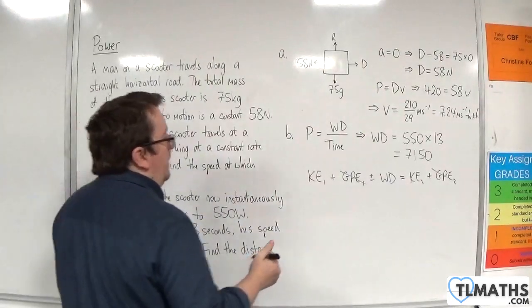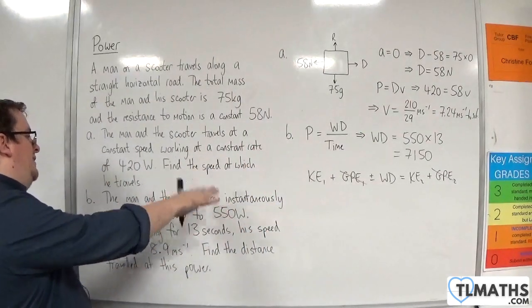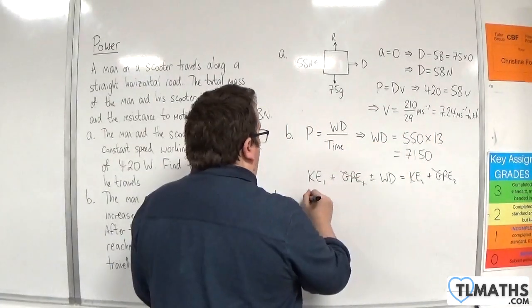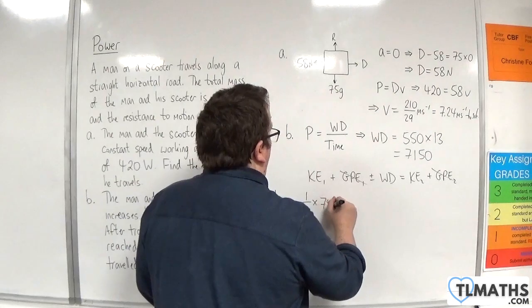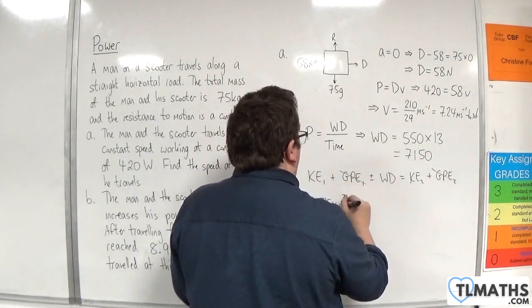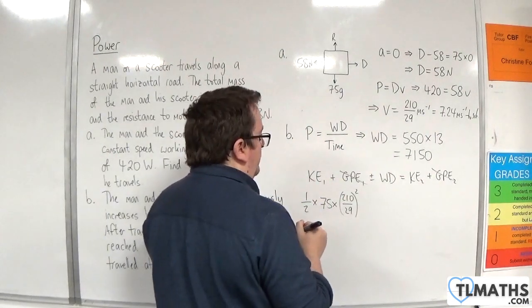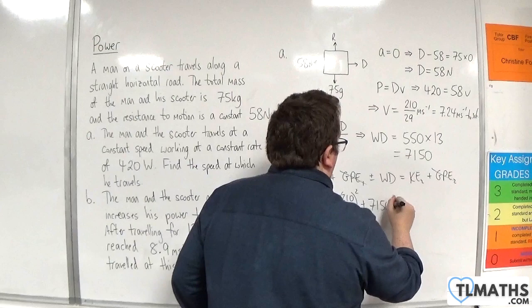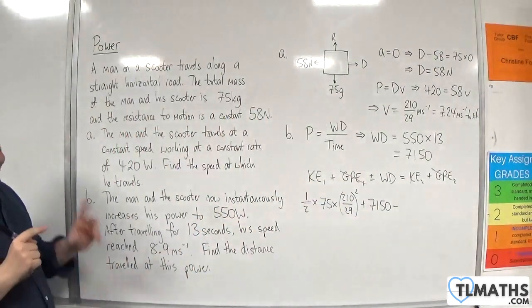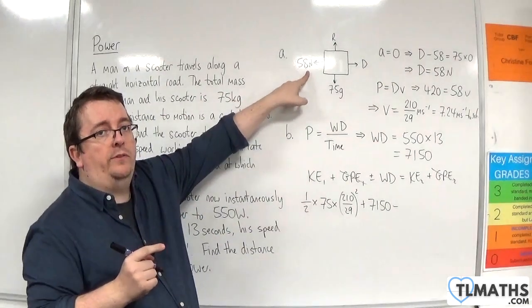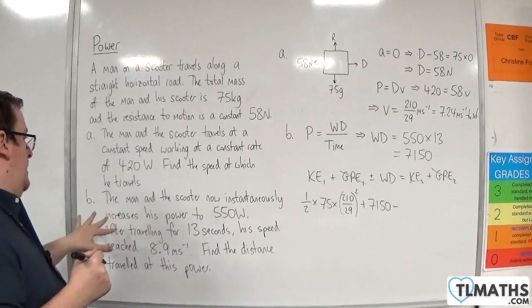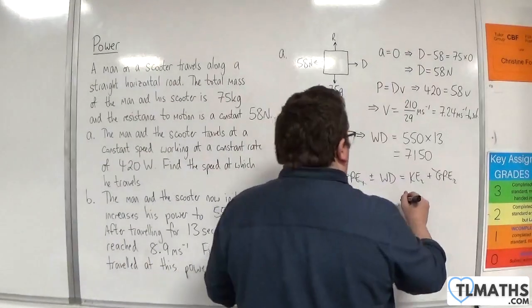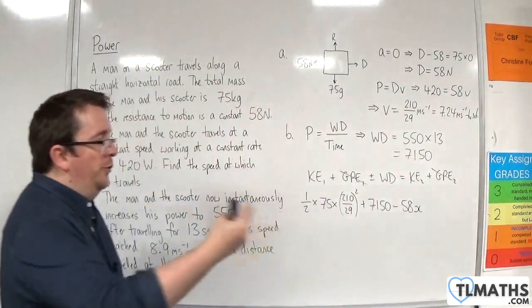The initial kinetic energy, because the scooter instantaneously increases the power, starts with the velocity that we had previously. That is 1 half times M, 75, times by V squared, so 210 over 29 squared. Then, plus the work done by the driving force, 7,150. But then we've got the work done by the resistance force, the 58 newtons. That 58 newtons is working for a distance of x. That's what we want to find. So it's 58 times by x, the force times the distance.